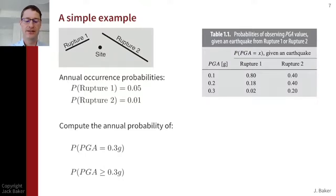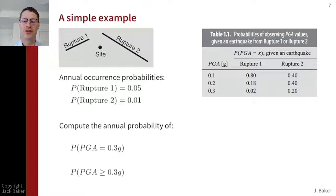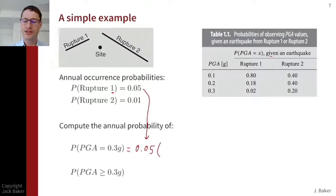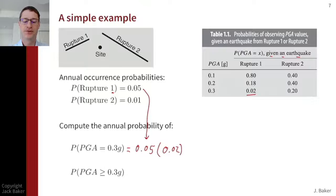If I want to know the annual probability of a peak ground acceleration of 0.3 g, there are two ingredients: how often does the earthquake occur, and given that earthquake, what's the probability it produces 0.3 g? For rupture one to produce 0.3 g, first I need rupture one, which happens with 0.05 probability per year. Then, given that rupture one occurs, it has a 0.02 probability of producing 0.3 g. So 0.05 times 0.02 gives a 0.001 probability per year that rupture one could produce 0.3 g.